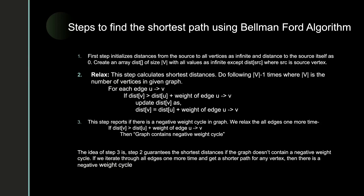The steps to find the shortest path using the Bellman-Ford algorithm are as follows. The first step initializes distances from the source to all vertices as infinity, and the distance to the source itself is set as 0. We have an array called dist that contains the minimum distance required to reach any vertex. Its size is the total number of vertices in the given graph. With all values as infinity and the source distance as 0, we move to the second step: relax each edge in arbitrary order V-1 times. After this, the algorithm is complete and we will have the shortest distance to every vertex.